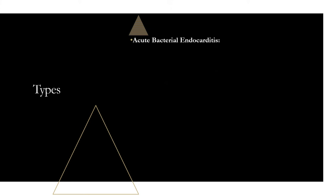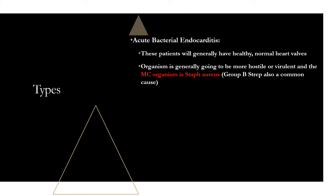There are a few types you should know — they help you choose treatment and identify organisms. Acute bacterial endocarditis generally involves normal, healthy valves. Because it's infecting healthy tissue, it requires a virulent organism. The most common organism is Staph aureus; Group B Strep is also seen but less common. Acute bacterial endocarditis has a sudden onset — hours to days.